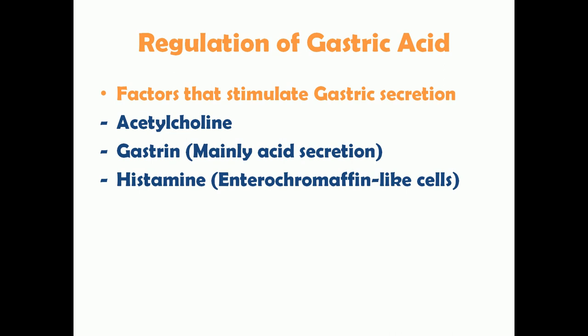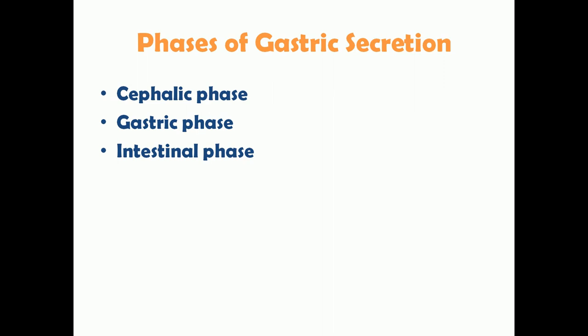There are three phases of gastric secretion: cephalic, gastric, and intestinal. The most interesting is the cephalic phase, which starts even before you consume food — just by the sight or thought of food, gastric acid begins to secrete in the stomach. This concept is implicated in the pathogenesis of peptic ulcer disease, though it is still not fully proven.